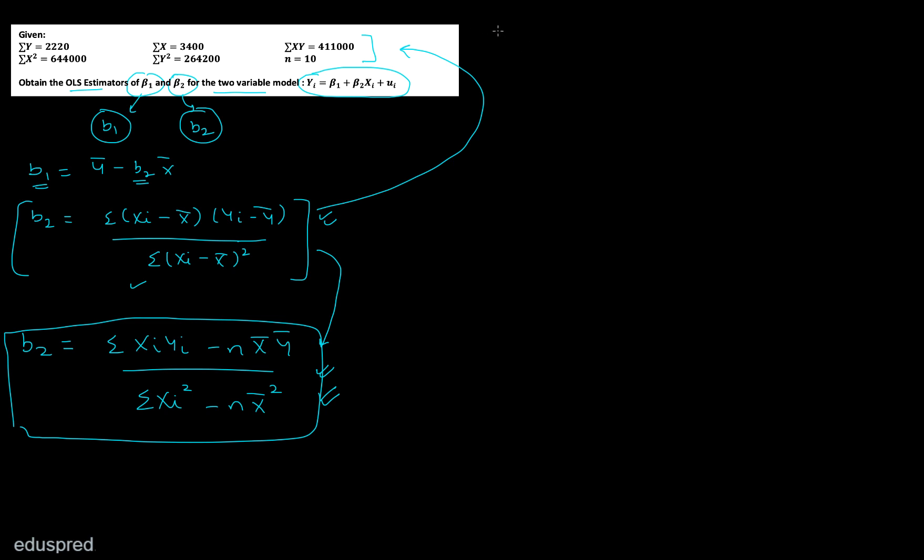So first of all I'm going to find the value of B2. B2 equals summation of xy which is 411,000 minus n is 10, then you have x bar and y bar. You're not given the value of x bar and y bar directly but it's quite simple to find. We know that x bar equals summation of xi over n, which is 3400 divided by 10, so this is 340. Similarly y bar equals summation of yi over n, which is 2220 divided by 10, and this is 222.